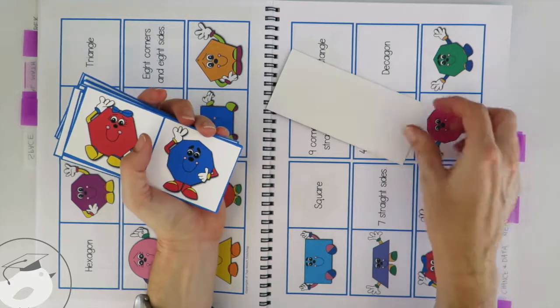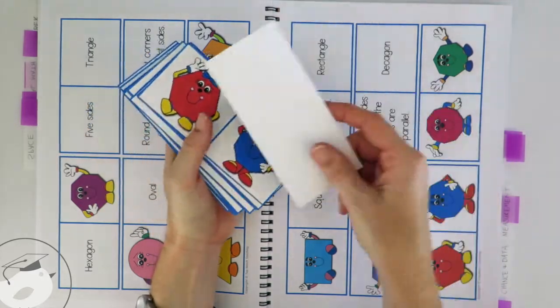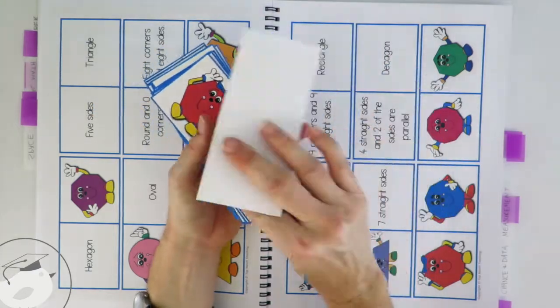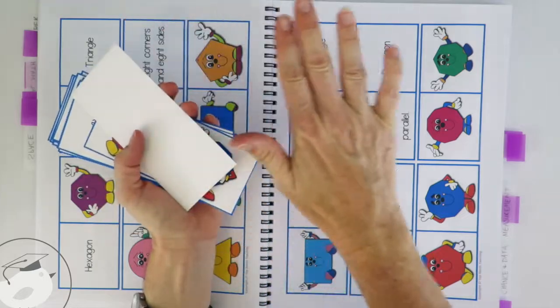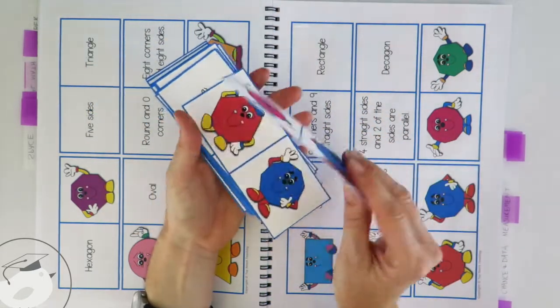I use thick cards so when they're turned over you can't really see through, which is much better. You could also do this as a matching game where you cut out each individual square and it's a little bit like concentration. You put them all out and then if you turn two cards over and they're the same, the students get to keep them.